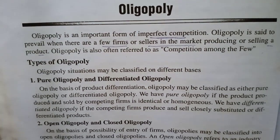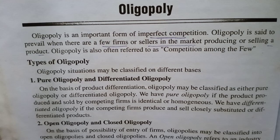Next, we look at types of oligopoly. The types are: pure oligopoly and differentiated oligopoly, open oligopoly and closed oligopoly, partial oligopoly and full oligopoly, and collusive and non-collusive oligopoly.